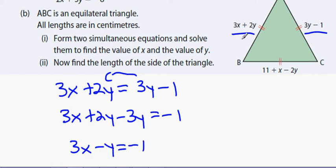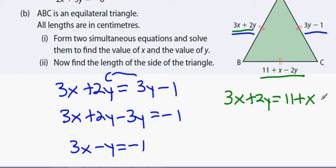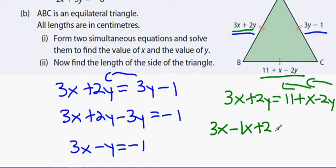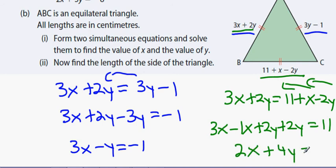For the second equation, I set 3x plus 2y equal to 11 plus x minus 2y. Bringing x and 2y over: 3x minus x plus 2y plus 2y equals 11, giving 2x plus 4y equals 11. That's the green equation.